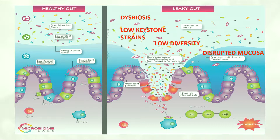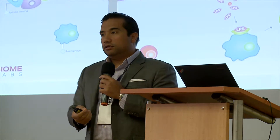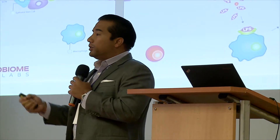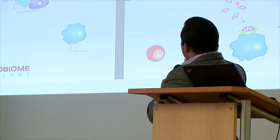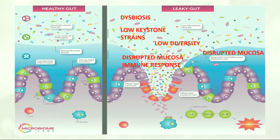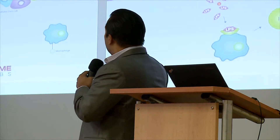When you have low keystone strains and low diversity, you start to see a disrupted mucosal structure. The mucin produced by goblet cells is stimulated by short-chain fatty acids, which are predominantly produced by these keystone strains in the lower bowel. When you have a disrupted mucosa, you start to get translocation of normal commensal bacteria to the inner part of the mucosa. This causes a disrupted mucosal immune response — a significant activation of the innate immune response in the mucosa chronically.